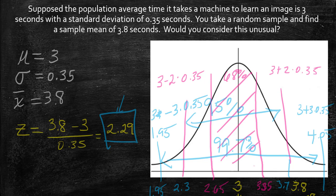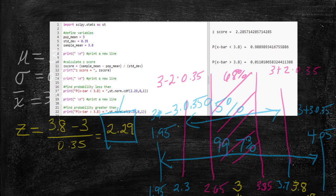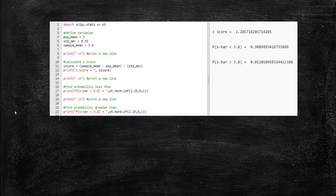This is why we standardize: to understand the empirical rule, and then to take the z-score and find the probability of observing a machine that learns in 3.8 seconds or less, or 3.8 seconds or more. This is where you can use Python code.